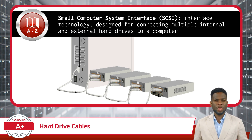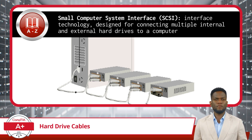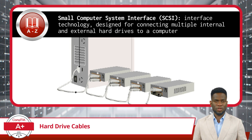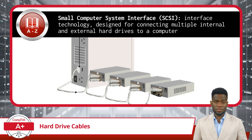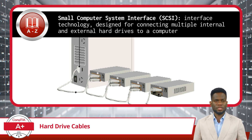Each SCSI device has two SCSI ports: one for incoming data and one for outgoing data. To string multiple SCSI drives together, you typically connect the outport of one device to the import of the next device. This creates a sequential connection, allowing data to flow from one device to the next.